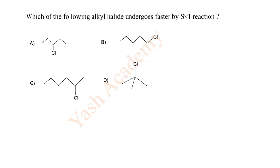Which of the following alkyl halide undergoes faster SN1 reaction? SN1 reaction proceeds via formation of carbocation, particularly tertiary butyl. Tertiary butyl is the correct.